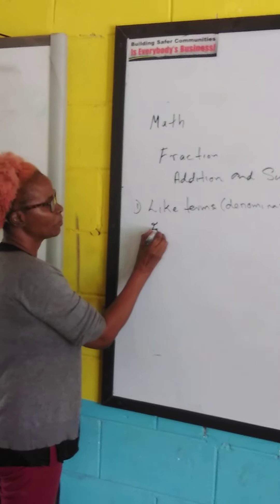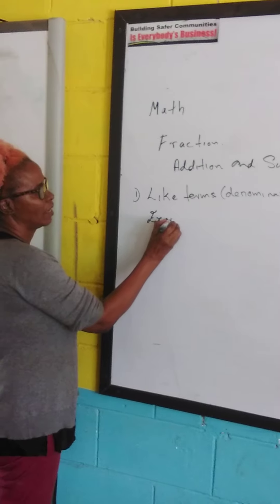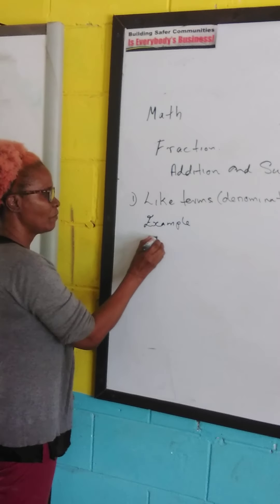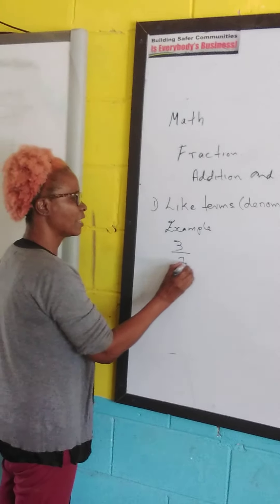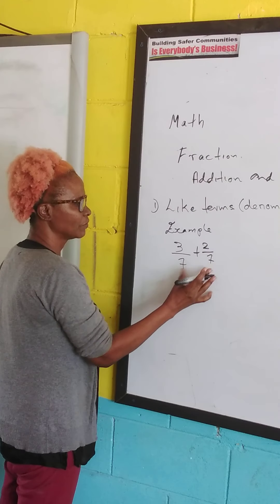Okay, first we're going to look at it. If we have 3 over 7 plus 2 over 7,